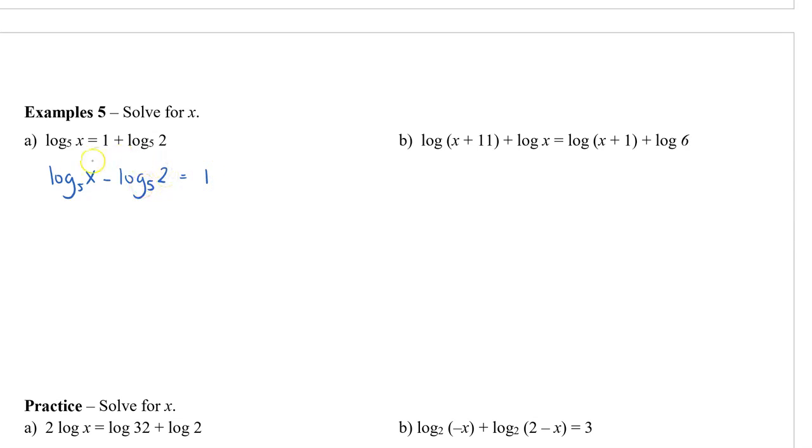We're going to get a single log on the left side by using the division rule. That's going to be x divided by two because we are subtracting our logs. So that equals one. In this situation, I'm going to rewrite this in exponential form. So this will be five to the power of one equals x over two.